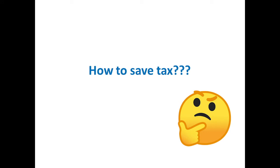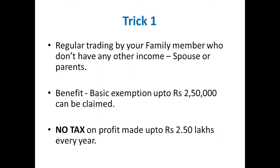Now we come to the main thing — how we can save tax. Is it actually possible to save taxes on capital gains? Yes, it is possible and many people are doing this. Instead of doing regular trading through your own account, you can do the trading on your family member's Demat account. They can claim the basic exemption up to 2,50,000, so if profit is up to 2,50,000, there will be no income tax.